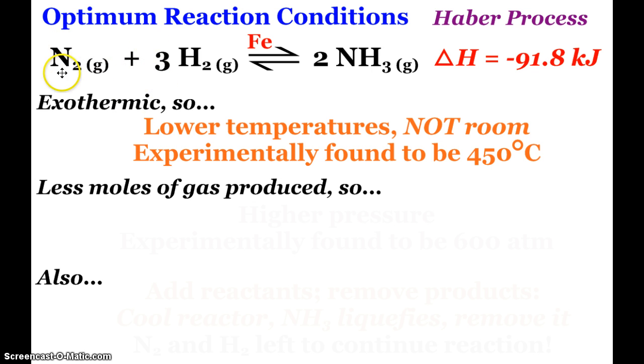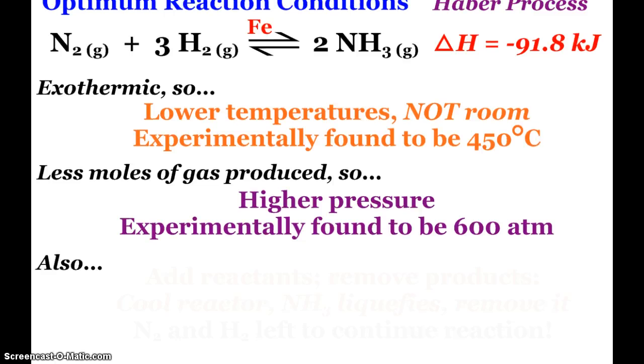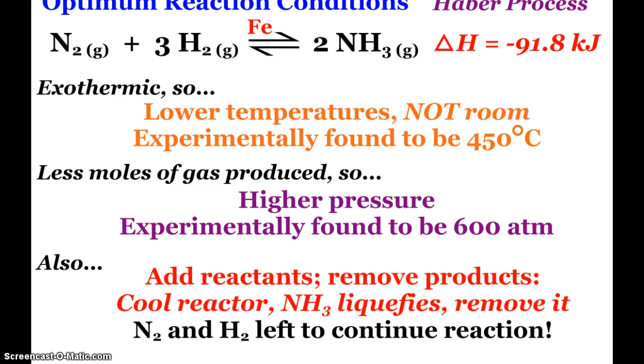Now there's four moles of gas reactants, two moles of gas products. Less moles of gas are produced, so we do want to run this reaction at a higher pressure. Again, experimentally, found to be 600 atmospheres. And we also want to continue to add our reactants. And as the ammonia is produced, we want to get rid of it and keep forcing the reaction to go to the right.